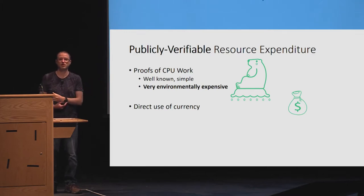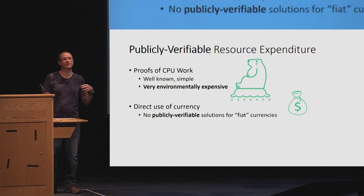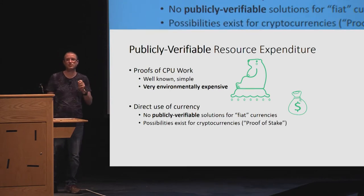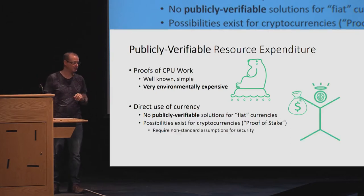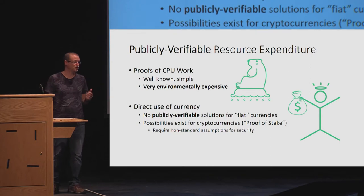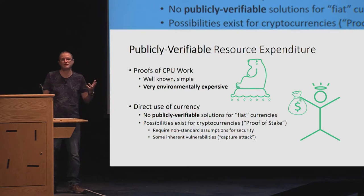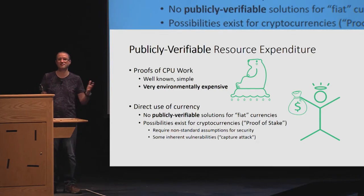One suggestion getting more popular is to use money. Unfortunately, we don't know how to get a publicly verifiable proof of regular currency — I can't prove to you that I burned dollars, at least not electronically. In the context of cryptocurrencies, we actually can prove things like that; this is called proof of stake. However, these are a bit problematic. They require usually some non-standard assumptions such as secure erasures, and they also have some inherent vulnerabilities such as 51% capture attacks. If somebody ever gets a majority of the money in the cryptocurrency, they'll have a majority forever, and it's not clear we can undo this.